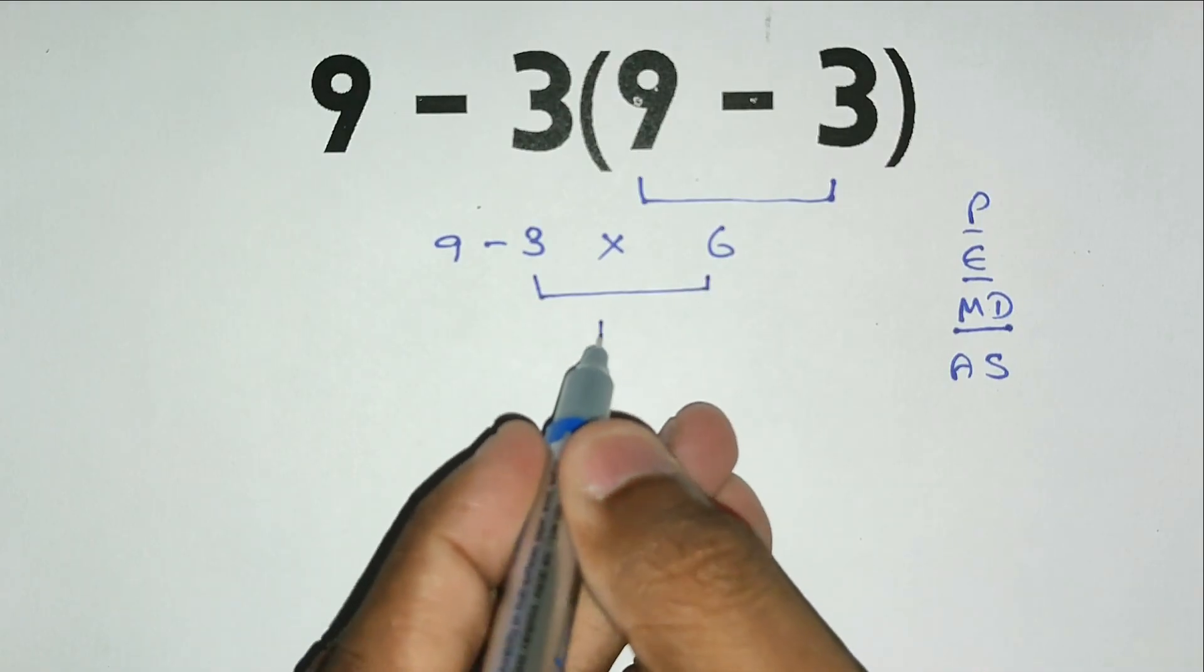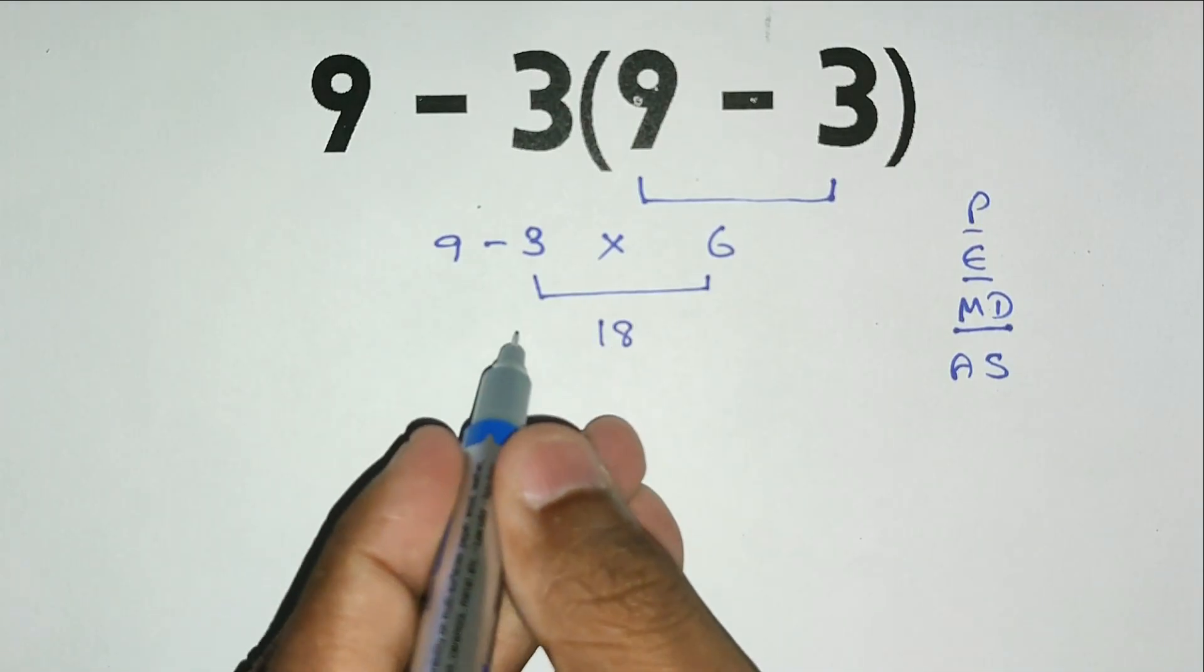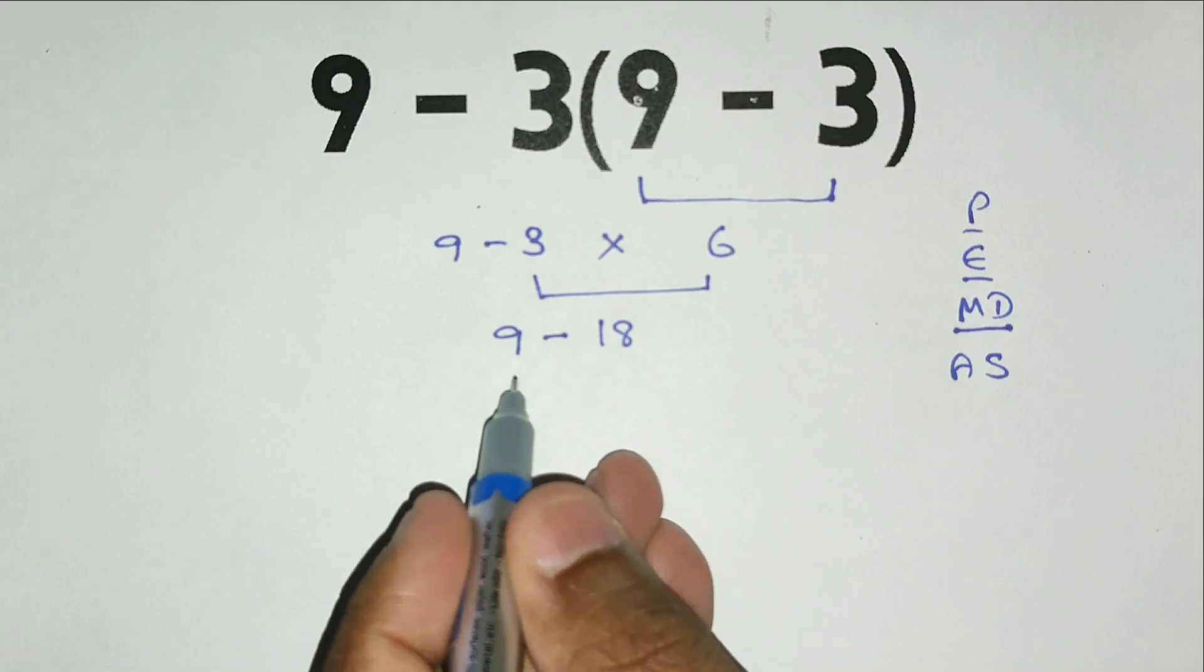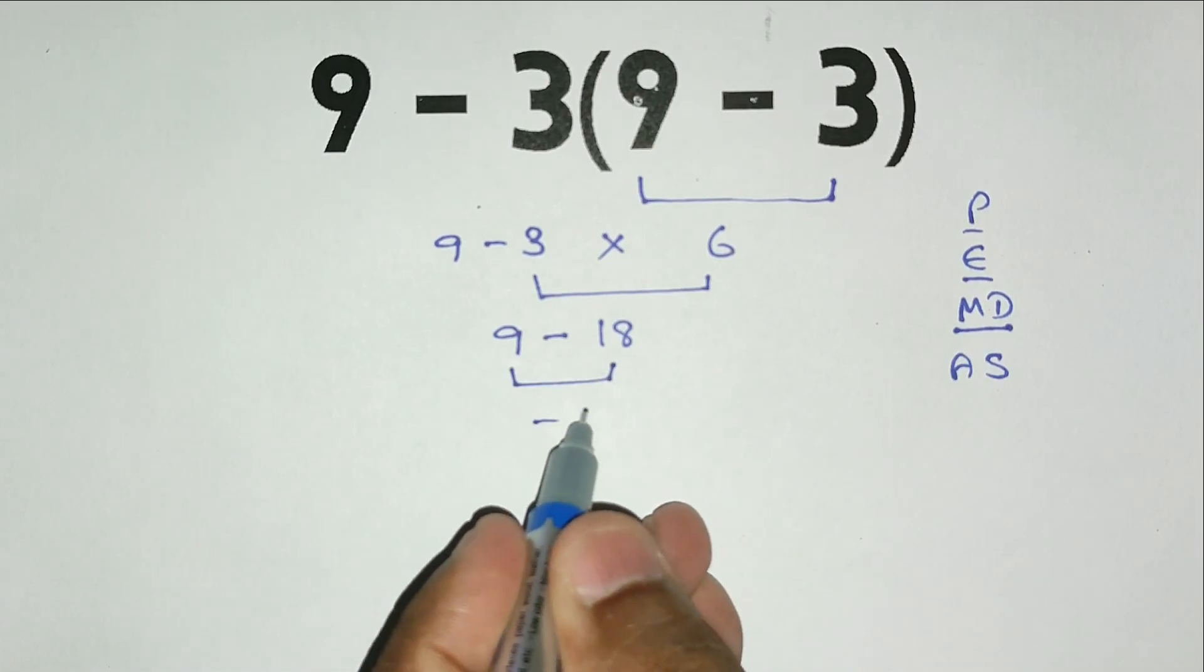Now we have 9 minus 18, which equals negative 9. So the correct answer is negative 9.